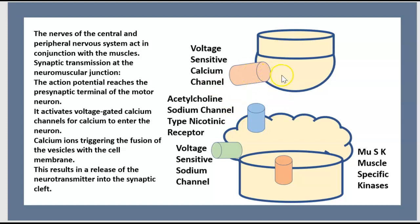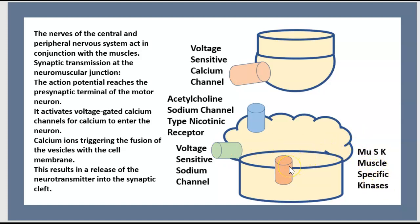In the presynaptic and postsynaptic regions, there are key components: the acetylcholine-sodium channel (nicotinic receptor type), voltage-sensitive sodium channels, and muscle-specific kinase channels.